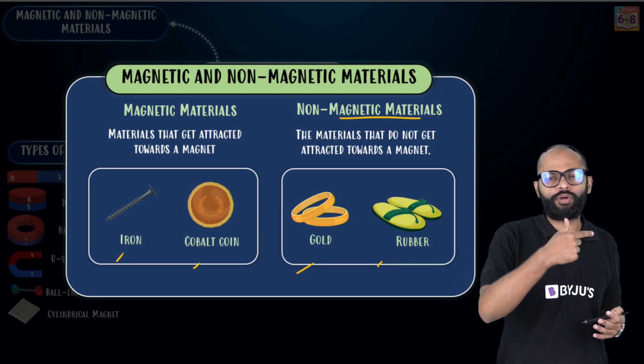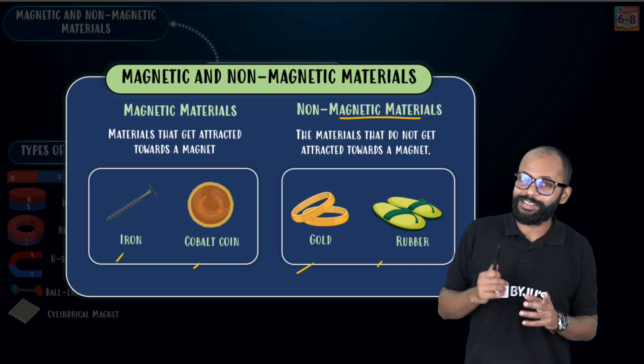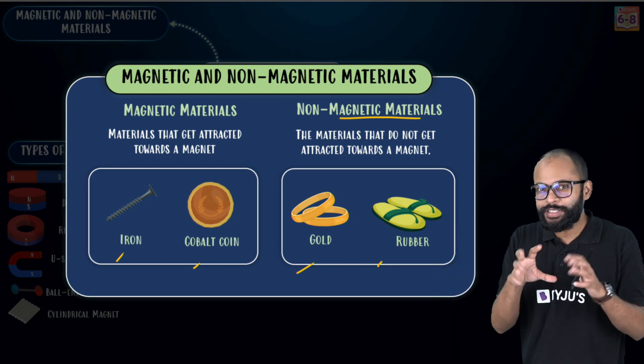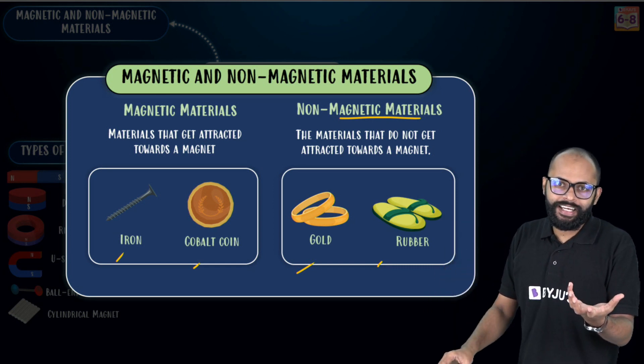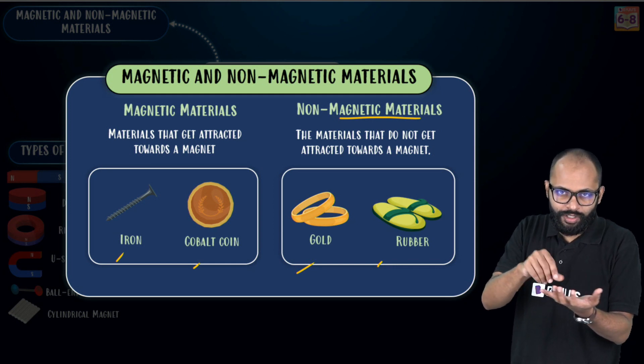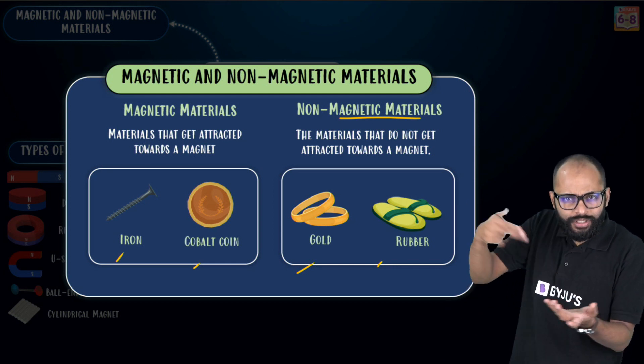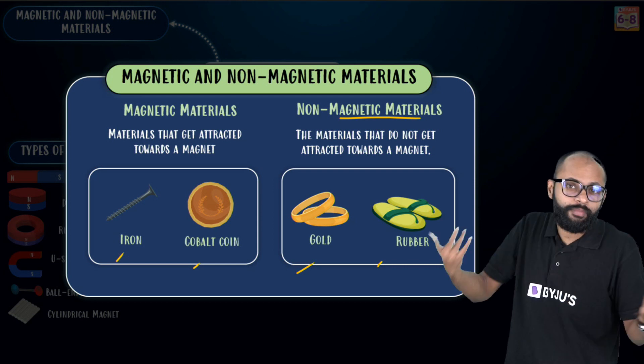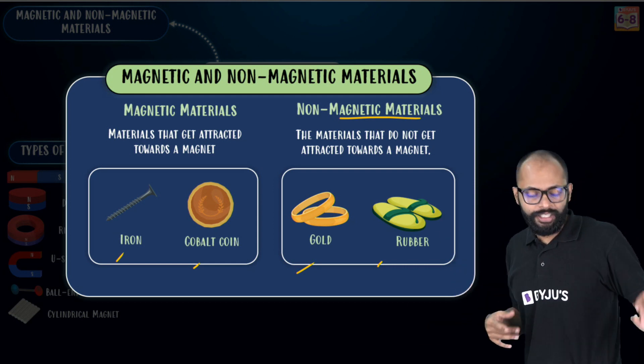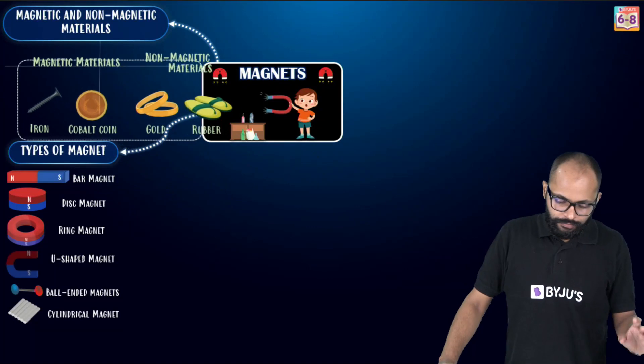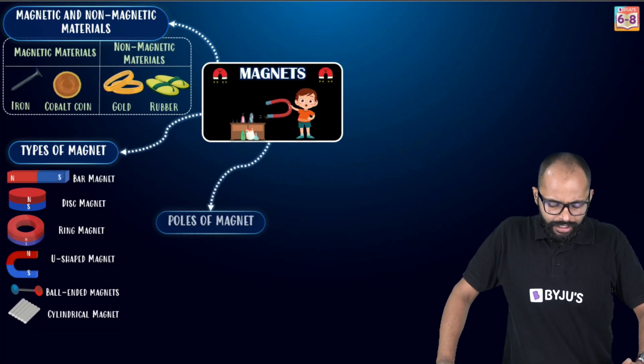And this is a good question. This is an important concept because that's how you separate. If you have sand and you have iron spread or sprinkled in the sand, how will you separate using a magnet? Because iron is magnetic, sand is non-magnetic, iron will go out. This is a big separation technique. It's about magnetic and non-magnetic materials.